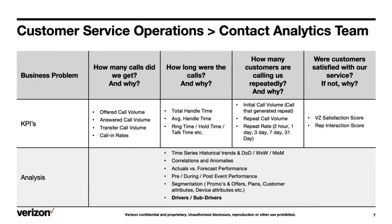We look at repeats on a two-hour, one-day, three-day, seven-day, and 31-day basis. We get quite granular with respect to whether the customer is calling us back again for the same issue. We also look at satisfaction scores — on a scale of one to ten, how likely would you recommend the Verizon brand to your friends and family? Or on a scale of one to ten, how would you rate your recent interaction with the agent when you called the call center? So we look at the interaction scores and the VZ satisfaction scores.